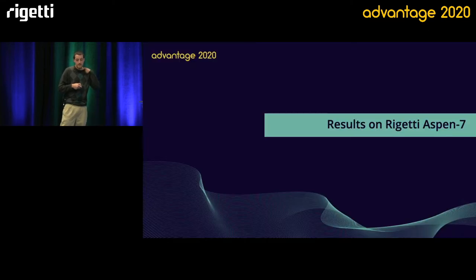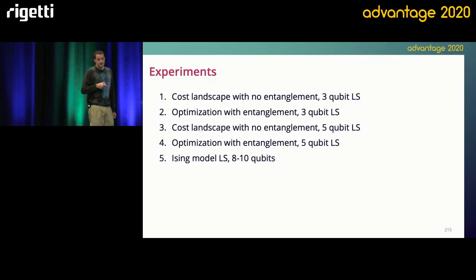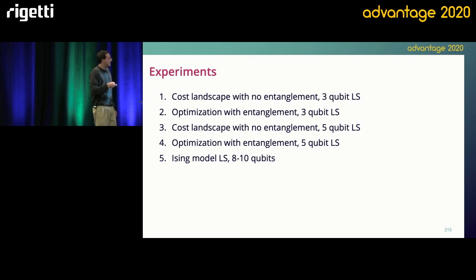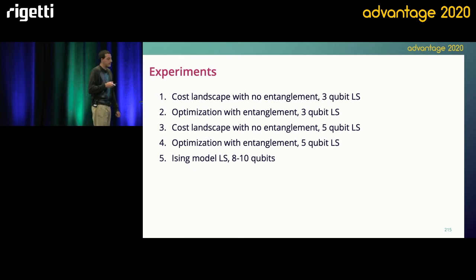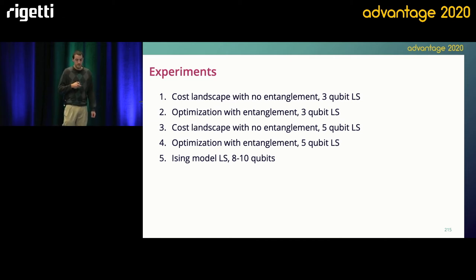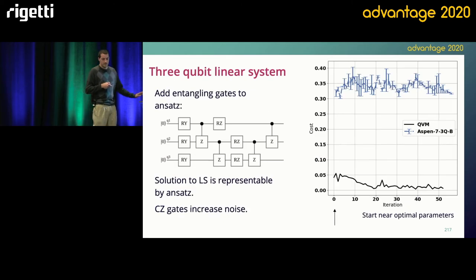I want to highlight some results that I took over the past month on Rigetti's new Aspen-7 chip. There are five experiments that I ran; in the interest of time, I'll only present the last three. We're going to look at the cost landscape for an ansatz with no entanglement for a five-qubit linear system — the same one we look at in the paper. We're then going to add some entanglement to the ansatz and look at how we can do the optimization, and then we're going to look at a different linear system formed from the Ising model on eight to ten qubits, and show that we're able to solve that linear system for those numbers of qubits.